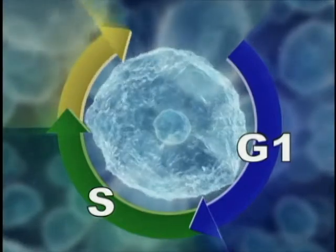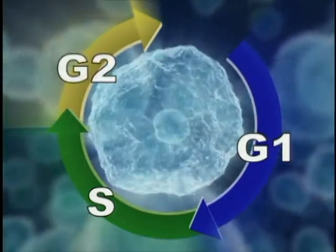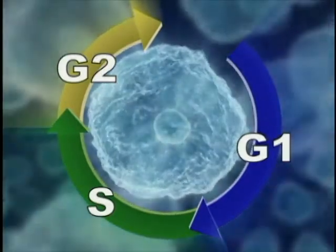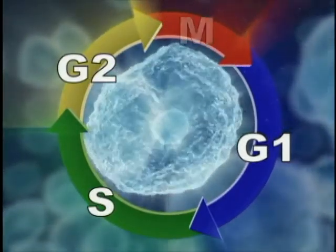After S phase comes G2. If the intracellular environment is favourable and the DNA has been duplicated correctly, the cell progresses to the final phase, M phase.